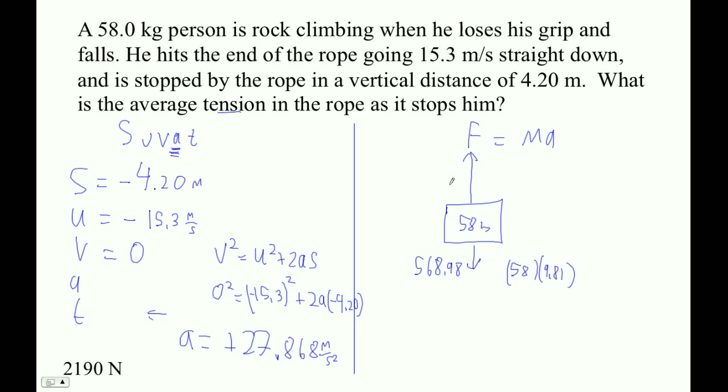And then here's the unknown force. I'm just going to call that F. This guy is obviously going to be a negative force. And now I'm all set. I can say F minus 568.98 equals 58 times positive 27.868.